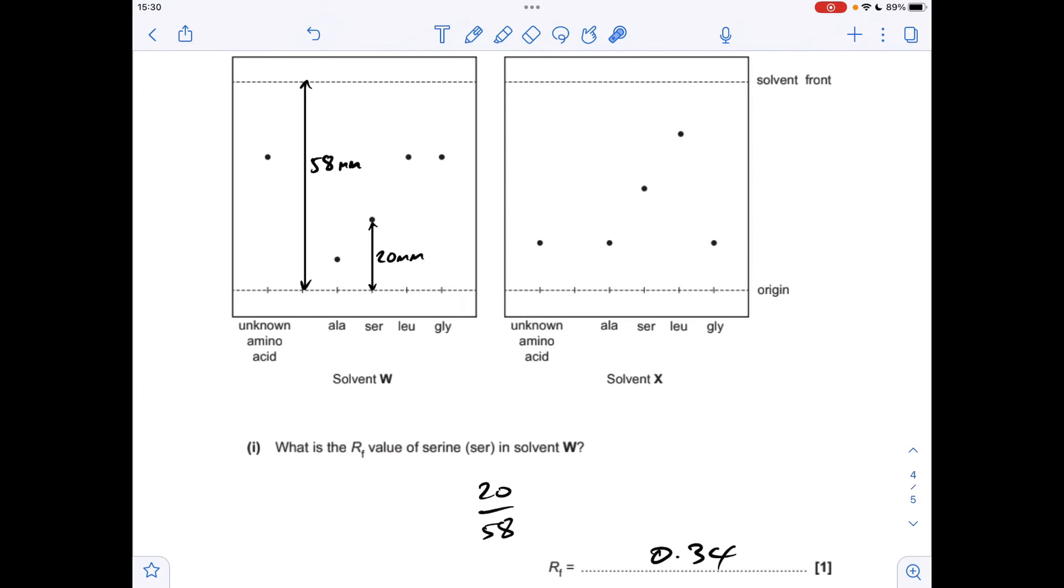So moving on to the part of the question about TLC, thin layer chromatography. So you'll notice I've measured the distance between the baseline and the spot for serine for solvent W. That came out at 20 mm on my computer screen. And this distance here from the baseline to the solvent front came out at 58 mm. The RF value is just the short distance over the longer distance. So I'm getting 0.34. The range allowed in the mark scheme was 0.33 to 0.35.